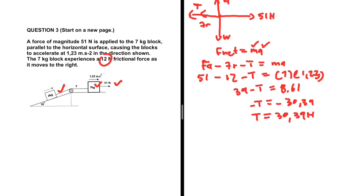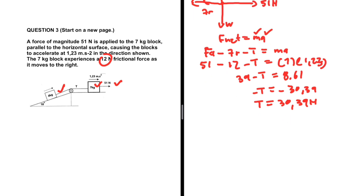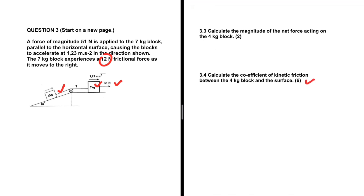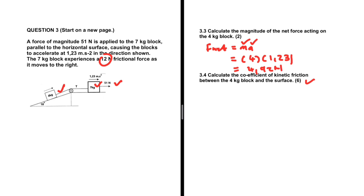So we have the tension. Now let's look at question 3.3: calculate the magnitude of the net force acting on the 4 kg block. We know F_net equals MA. We have the mass and the acceleration, so this is just direct substitution. The mass is 4 kg and the acceleration is 1.23 meters per second squared. Putting that in the calculator gives 4.92 newtons. And just like that we have the magnitude of the net force acting on the 4 kg block.